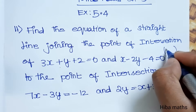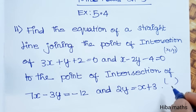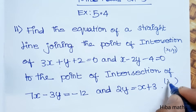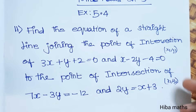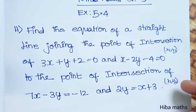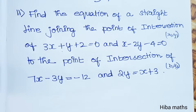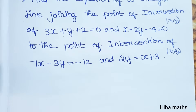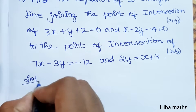The first line is x1, y1 and the second line is x2, y2. So let's solve the equation for both intersection points.